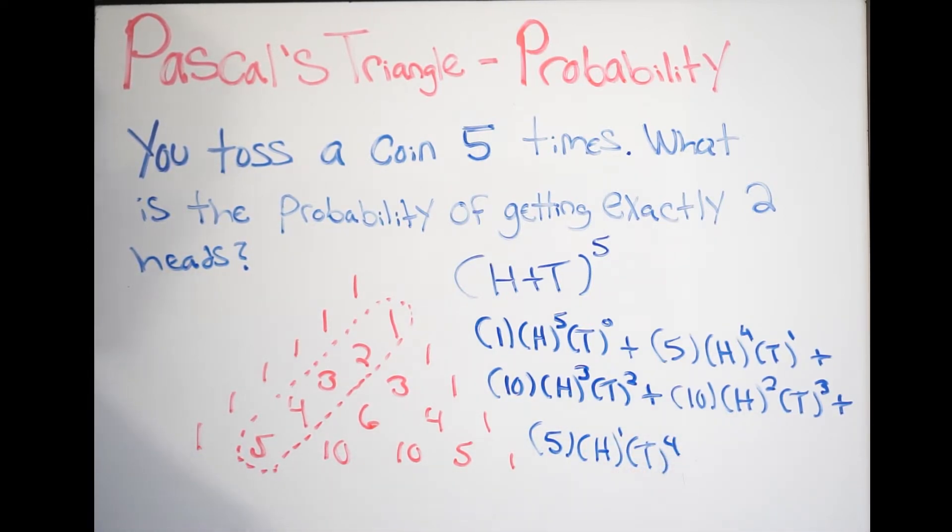And then my last one, I'm going to get plus one, and I get H to the zero, and I get T to the fifth. Again, so that's to the zero.